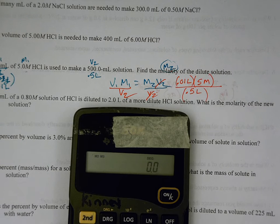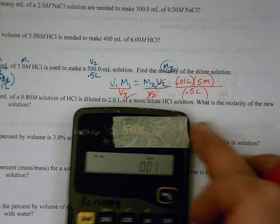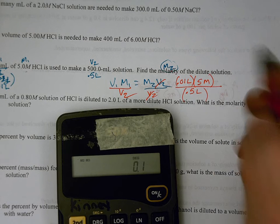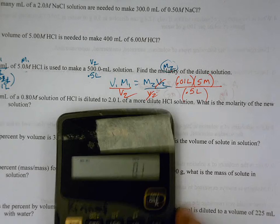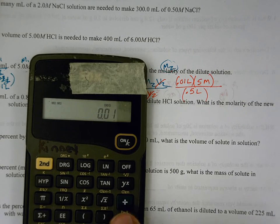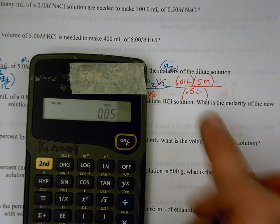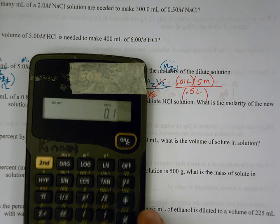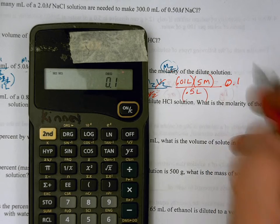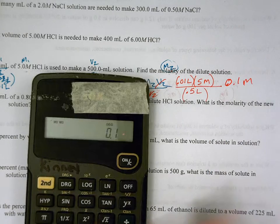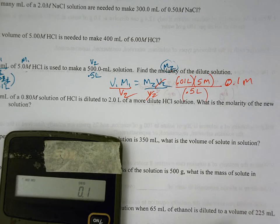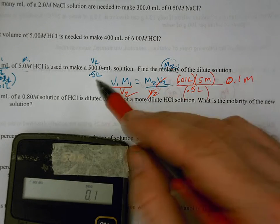And on this one, let's see, we've got 0.01 divided by 0.5 times five. 0.01 times five divided by 0.5. 0.1 molarity. And that's quite a bit smaller than what we started with, and that should make sense. And that'll be the new solution of HCl.